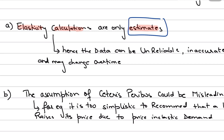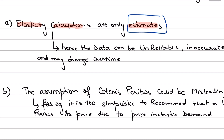Also, the data itself could be past data, which may not reflect the current consumer habits. So consequently, we could argue - and that's how you write in the exam - that elasticity data can be unreliable. It could also be inaccurate, and it could change over time. So these are three things you could write in the exam: it could be unreliable, inaccurate, and it could change over time.